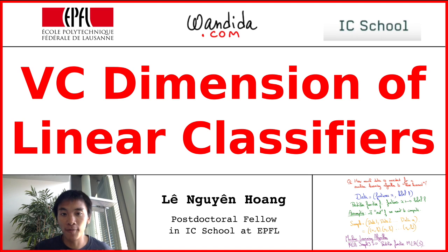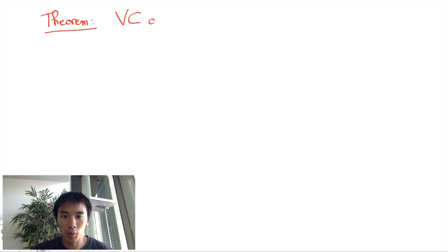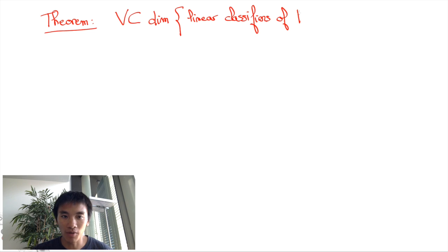In this video, we will compute the VC dimension of linear classifiers. More specifically, we will prove the following theorem: the VC dimension of linear classifiers of R^d is d plus 1.